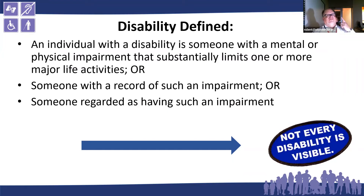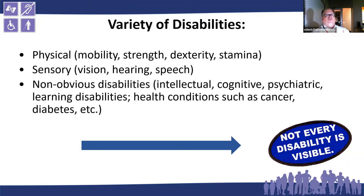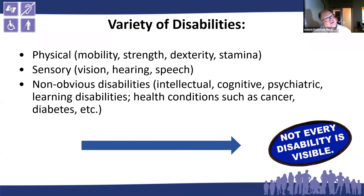Disability defined: an individual with a disability is someone with a mental or physical impairment that substantially limits one or more major life activities, or someone with a record of such impairment, or someone regarded as having such an impairment. Not every disability is visible. You have a variety of disabilities: physical — mobility, strength, dexterity, stamina; sensory — vision, hearing, speech; non-obvious disabilities — intellectual, cognitive, psychiatric, learning; health conditions like cancer and diabetes. Also, remember you have COVID long haulers. You have all kinds of disabilities that you can see and not see.